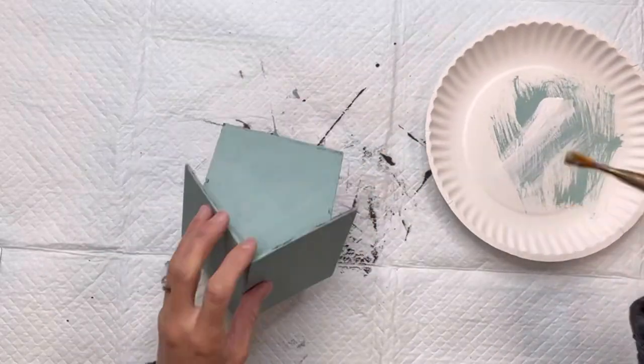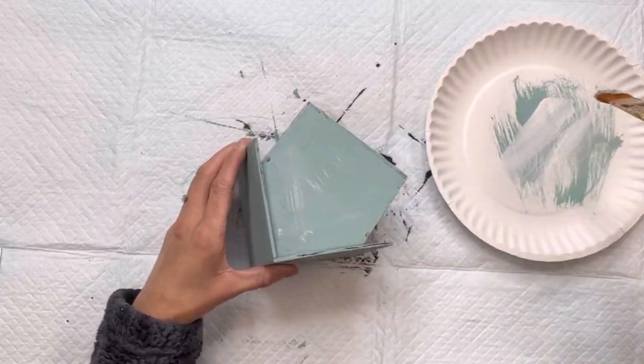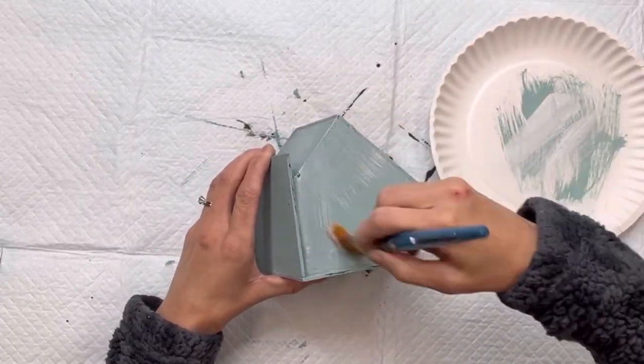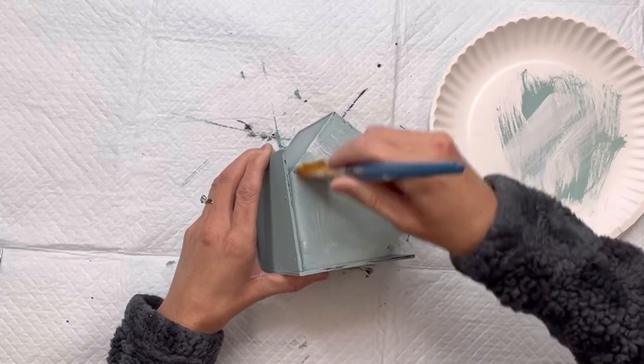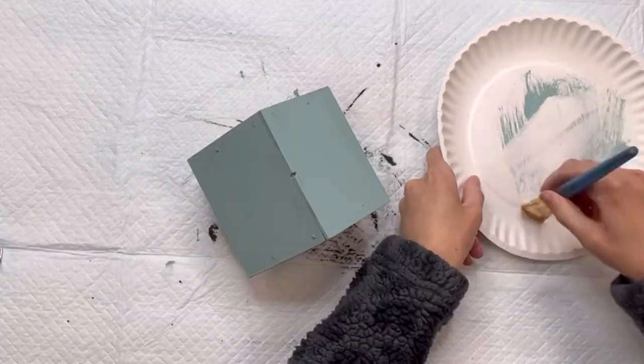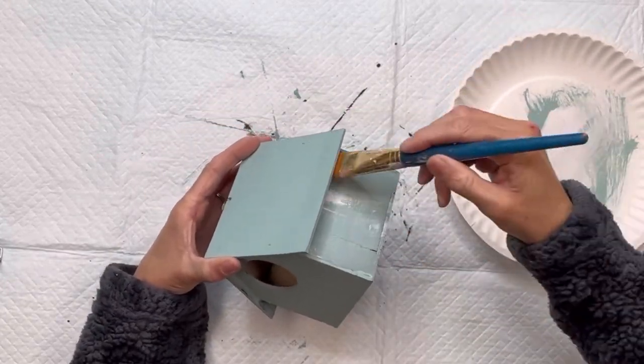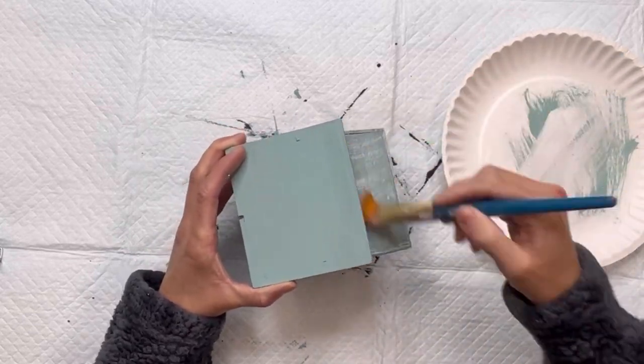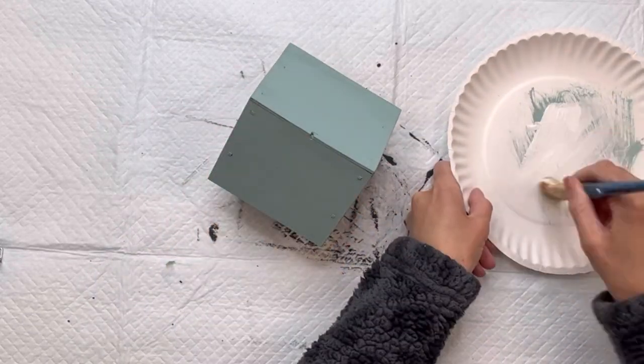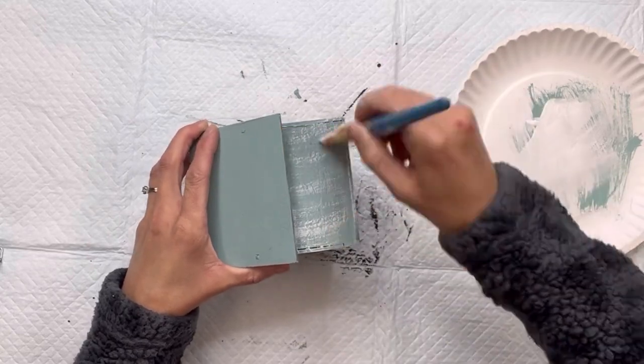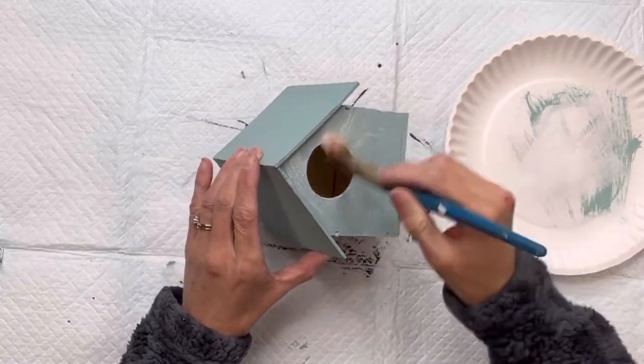I'm going to allow everything to fully dry and then I'm going to take some Wise Owl Snow Owl and just dry brush it on top of the Higgins Lake. Now you can certainly just leave it the Higgins Lake color. You can distress it in some areas to pull the black through but I decided to just dry brush the white.